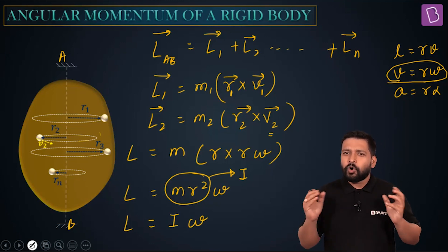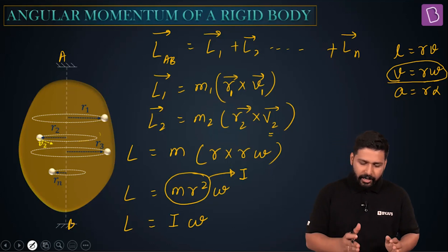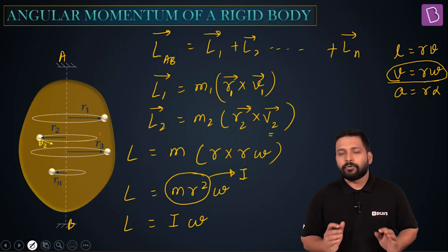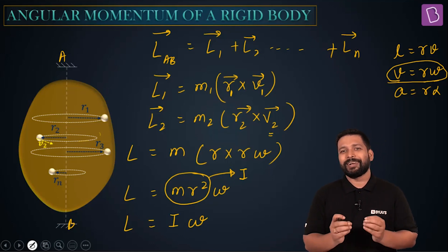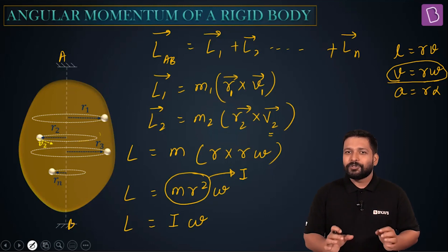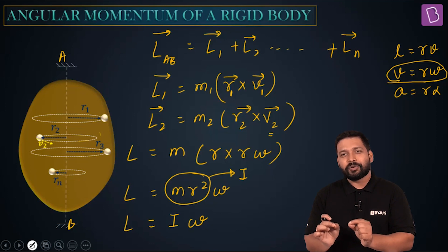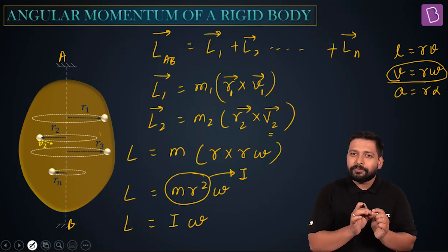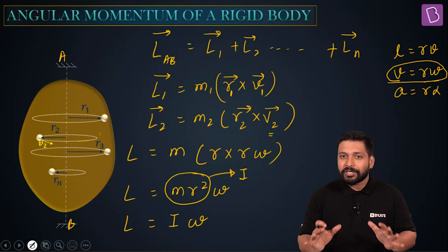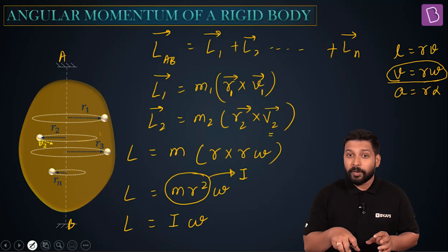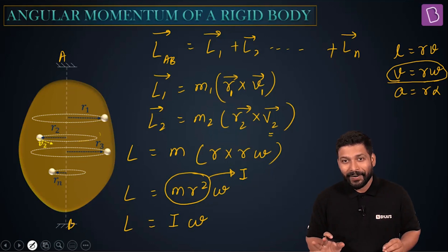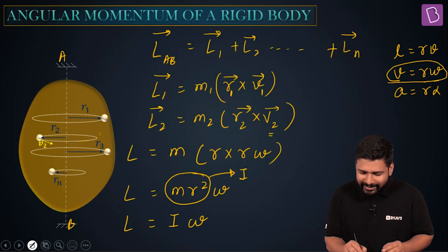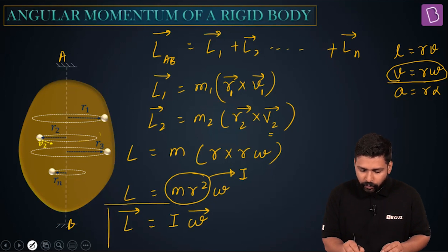This is just for one single particle. If you add and integrate it for all the different particles, you get L1 plus L2 plus L3 plus L4 and so on. You'll have M1R1² plus M2R2² plus M3R3² and so on, all multiplied by omega. The total sum M1R1² plus M2R2² plus M3R3² for all particles gives the net moment of inertia of the rigid body, so the total angular momentum is L equals I omega.